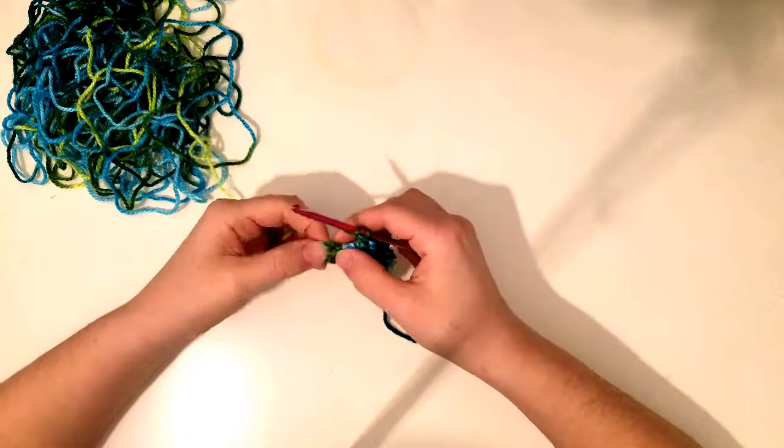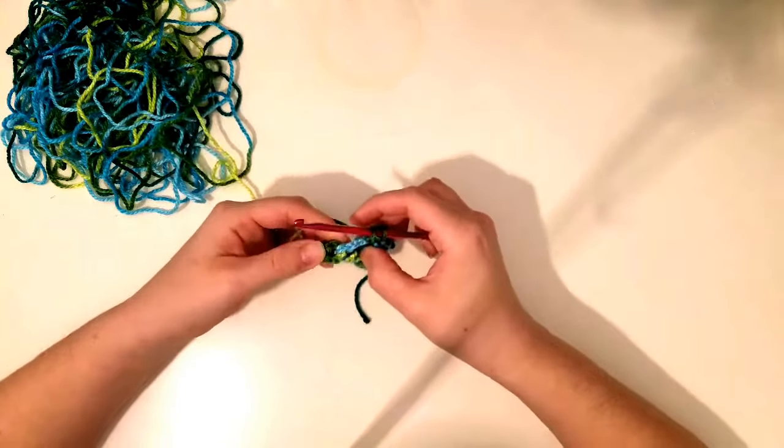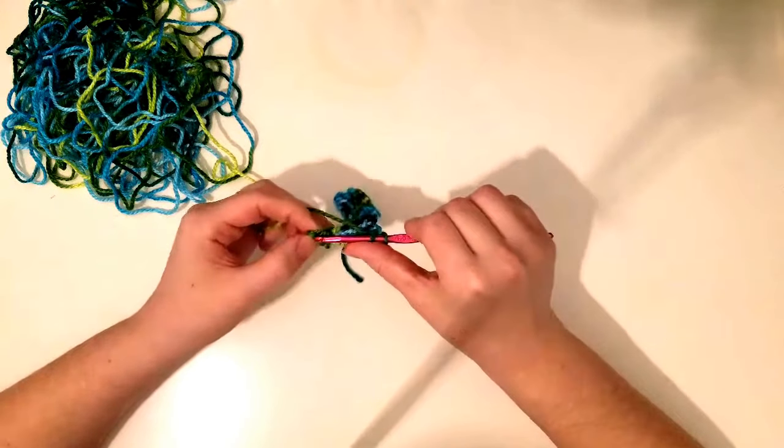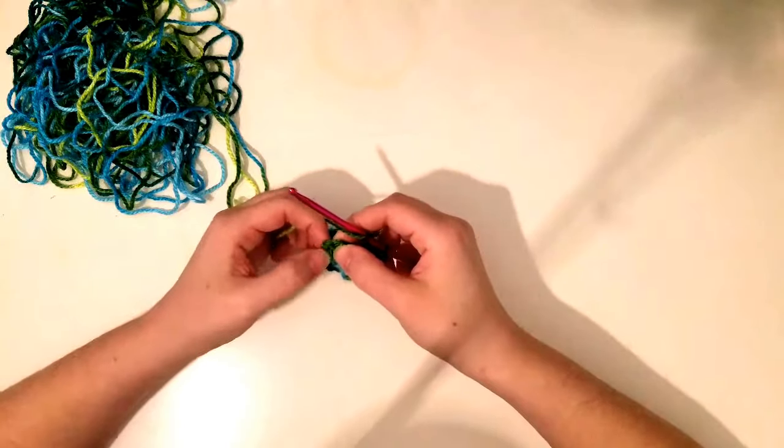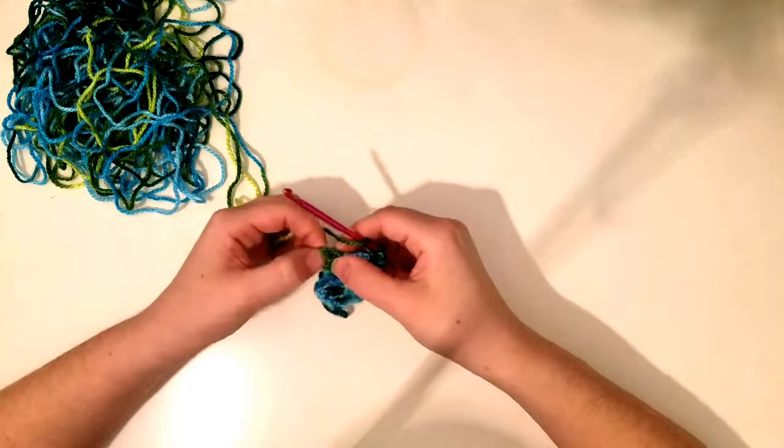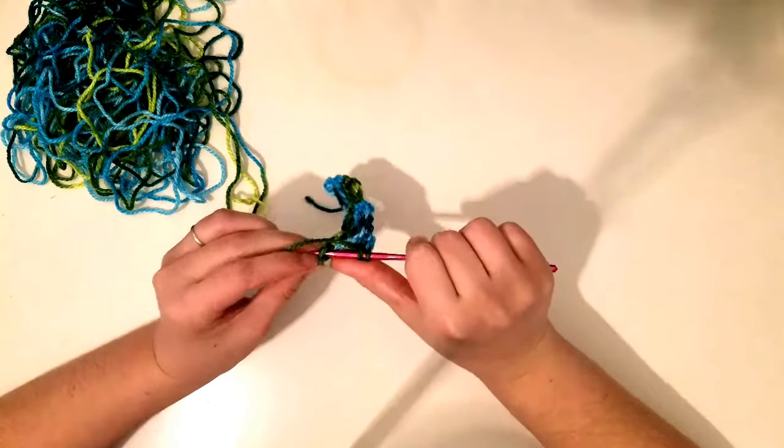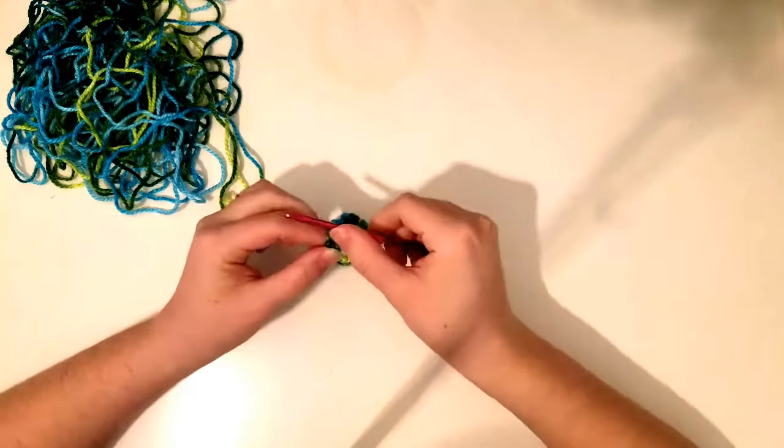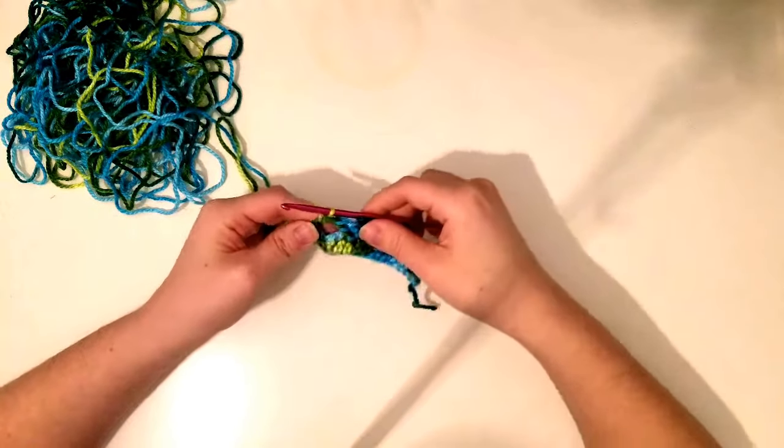Go ahead and make your last double crochet into the top, sorry, the third chain that you made in your chain three. So mine is kind of hard to see because it's dark colors. But one, two, three right here and make your double crochet.